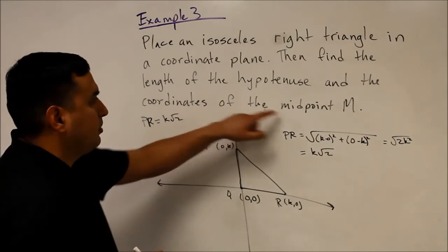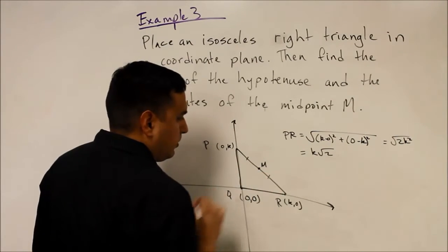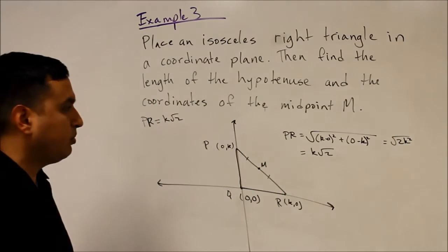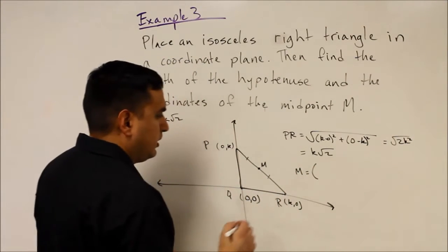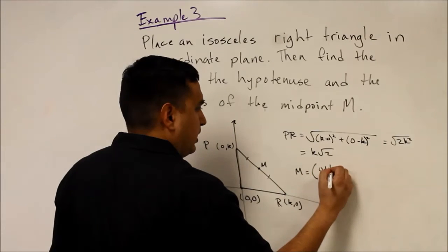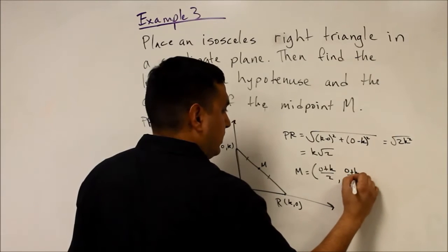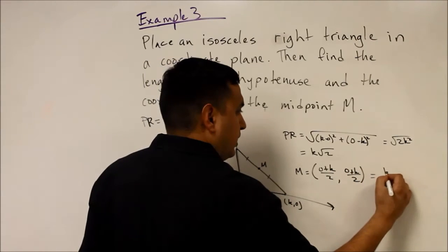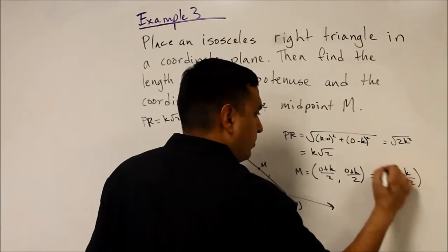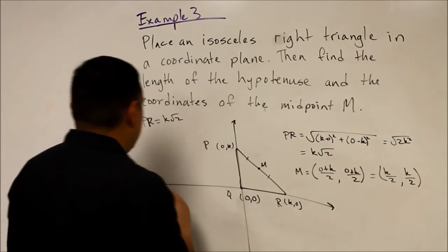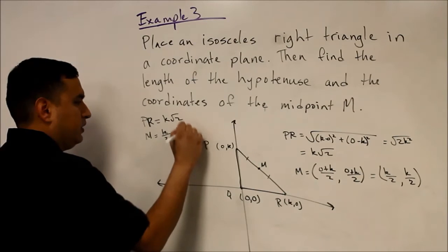Now we find the midpoint M of the hypotenuse. Using the midpoint formula between P = (K, 0) and R = (0, K): x-coordinate = (0 + K)/2 = K/2, and y-coordinate = (0 + K)/2 = K/2. So the midpoint M is (K/2, K/2).